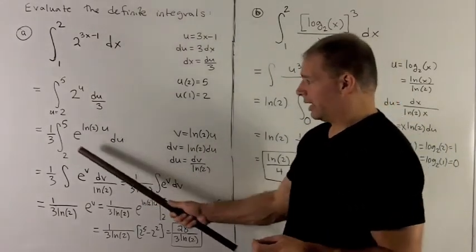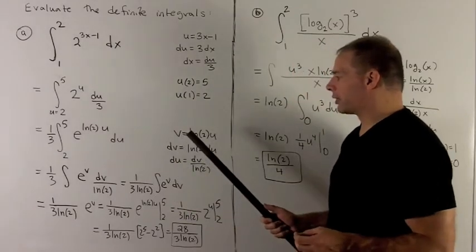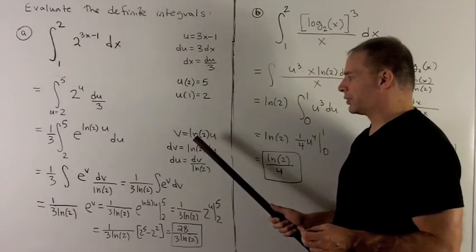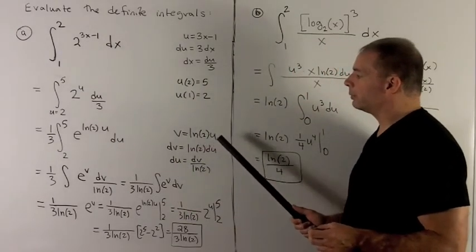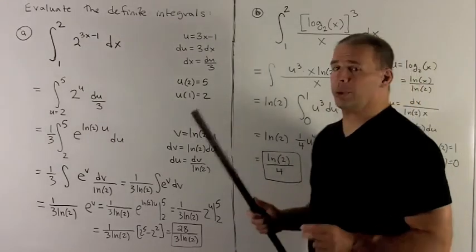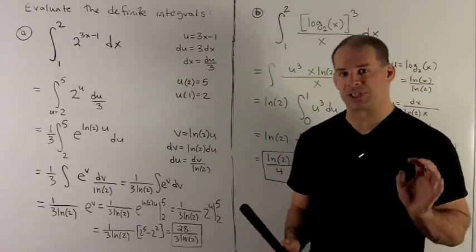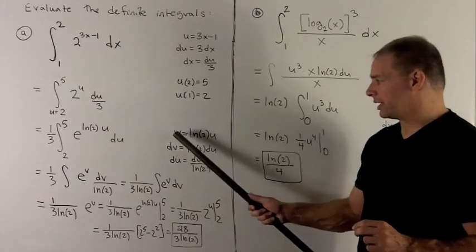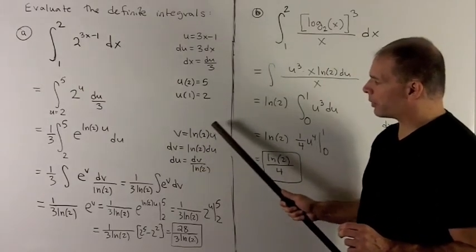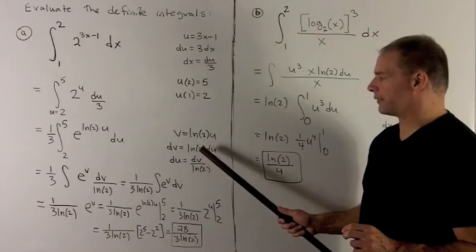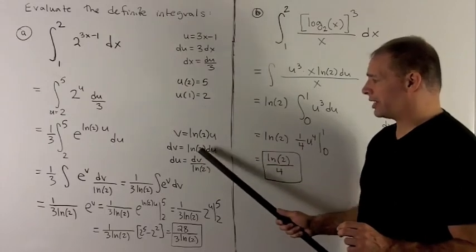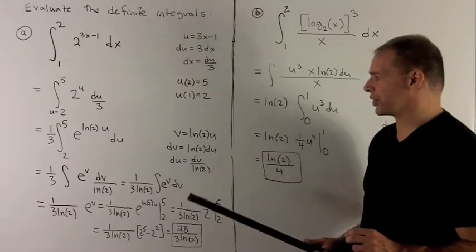To get the antiderivative of this function, I'm going to do another substitution, v equals natural log of 2 times u. Now, natural log of 2 looks fancy, but it's just a number. So when I take the derivative of this part with respect to u, it's just going to be dv equals natural log of 2 du. And then I just push the natural log of 2 to the other side.